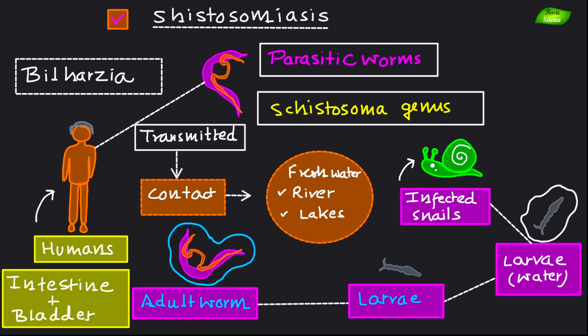The adult worms reside in the blood vessels surrounding the intestine and bladder. The target organs are the intestine and bladder, which can lead to chronic infection and severe complications like liver damage, kidney failure, or even bladder cancer. That is why schistosomiasis is considered one of the most important parasitic diseases.